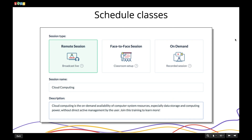With Showtime, you can schedule three types of classes. Remote sessions are your virtual classes where students can see and hear you online. Live sessions are like a traditional classroom setup where students are in front of you and can participate in polls. On-demand sessions are where you upload a video or recorded session that students can watch at any time — particularly useful for after-class learning or when a learner misses a class.